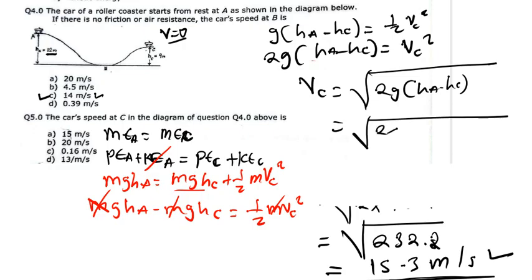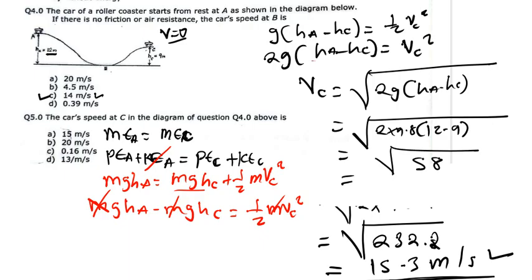Plugging in values: 2 × 9.8 × (12 − 9) = 2 × 9.8 × 3 = 58.8. So V_C = √58, which gives 7.67 meters per second.